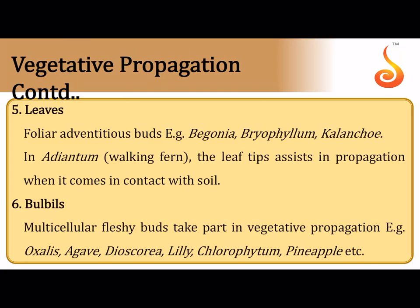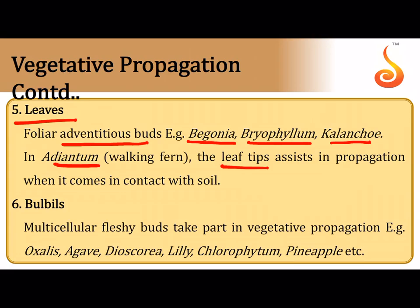Leaves also help in vegetative propagation by developing adventitious buds — there is no involvement of gametes, fusion, or spores. In Begonia, Bryophyllum, and Kalanchoe, adventitious buds called foliar buds develop from the margin of the leaves. In the case of the walking fern, the leaf tip assists in propagation — when the leaf tip touches the soil, a new plant is formed.